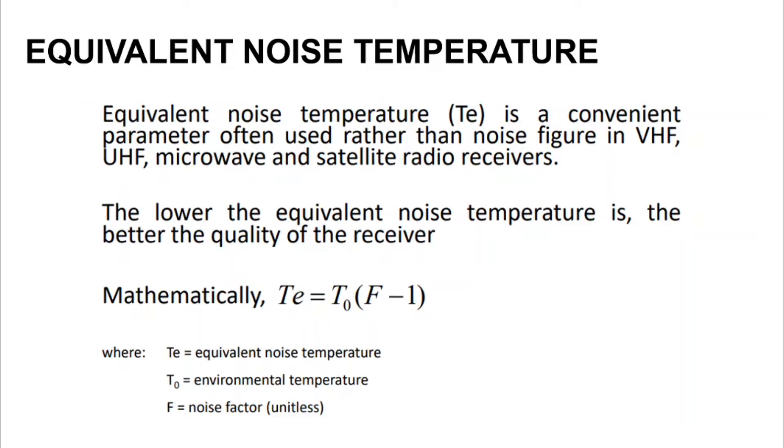Equivalent noise temperature, or TE, is a convenient parameter often used rather than noise figure in VHF, microwave, and satellite radio receivers. The lower the equivalent noise temperature is, the better the quality of the receiver.